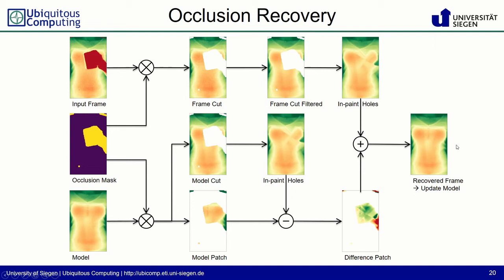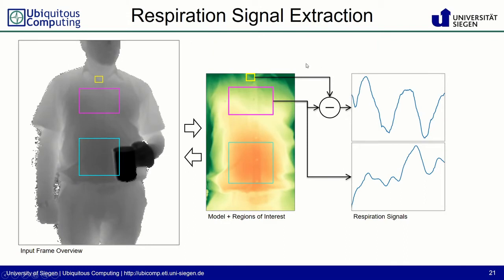Now that we have the recovered frame, we can do the respiration signal extraction. As before, we take the mean of the chest or abdomen and subtract the 90th percentile of the throat region. By subtracting both signals we obtain a clear respiration signal. Without taking this difference, the motion artifact enters the signal and we don't have a clear respiration signal.